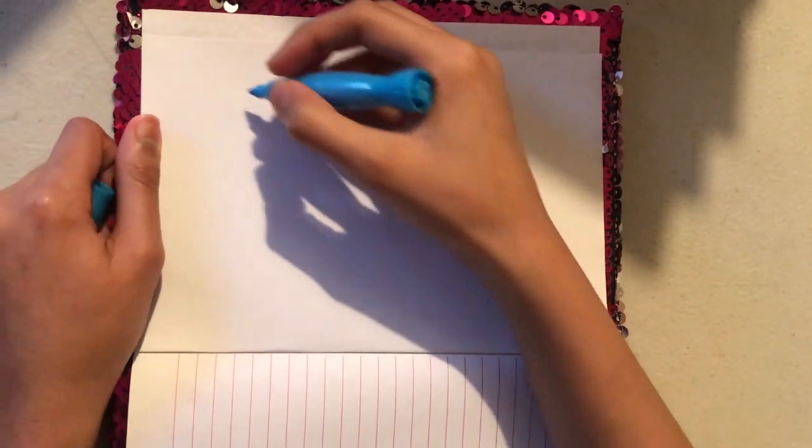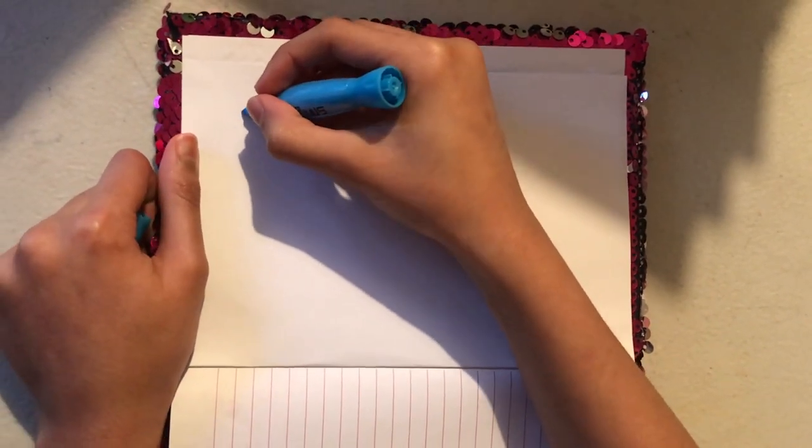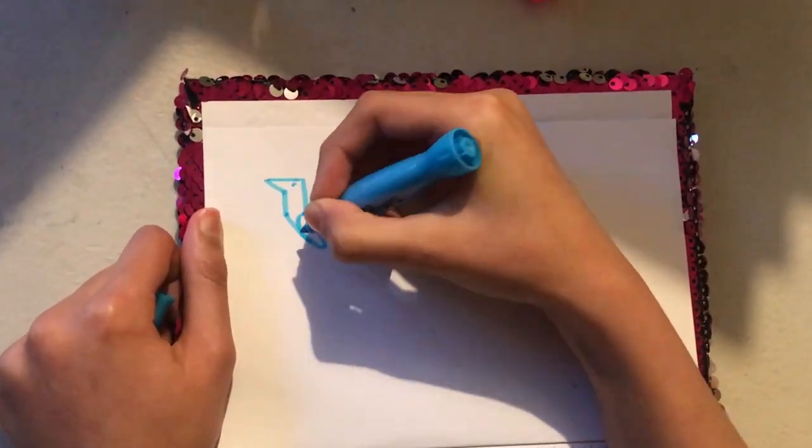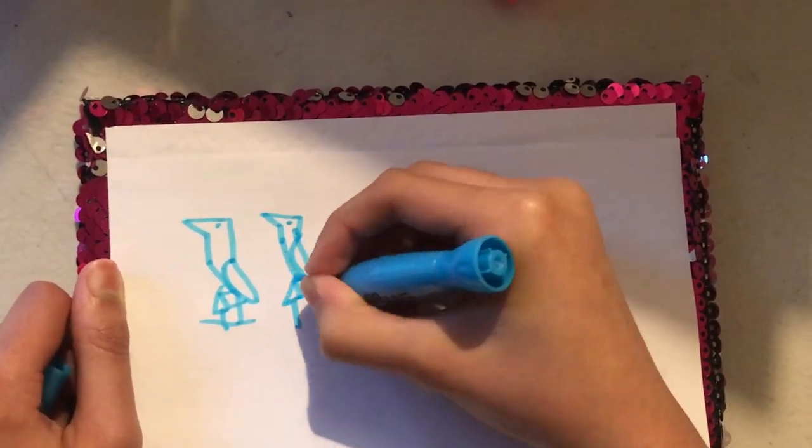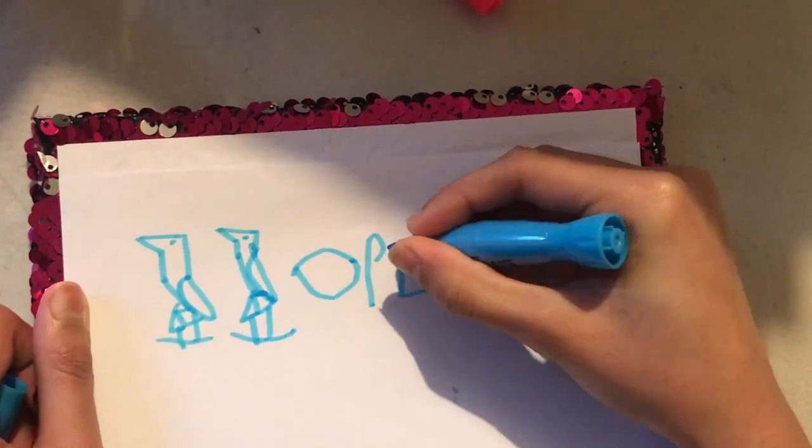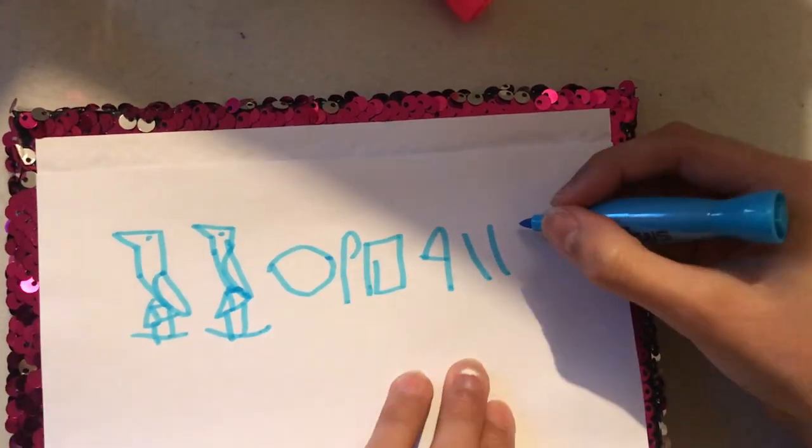If I want to write my name, it will look like this: A-R-S-H-I-Y-A, Aarshiya.